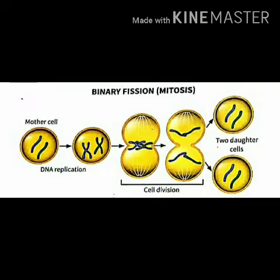First of all, the genetic material inside this cell, which is the DNA inside the nucleus, replicates — meaning it forms its duplicate or makes another copy. Then the nucleus splits into two, and the cytoplasm where the nucleus is present divides into two cells called the daughter cells, which then grow to their full size and divide again into two more.